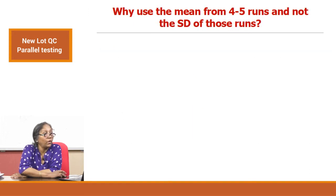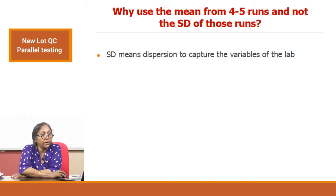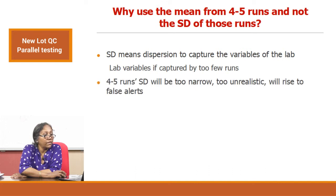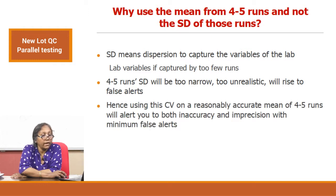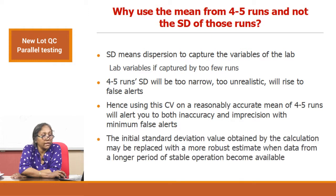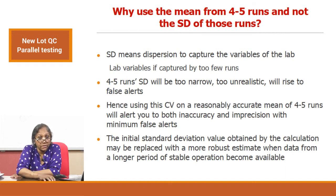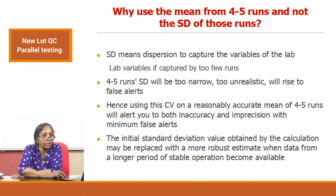Why use the mean from 4 to 5 runs and not the standard deviation? Standard deviation means dispersion, and to capture all the variables of the lab you need adequate runs. Lab variables captured by too few runs is not a good idea — 4 to 5 runs of standard deviation will be too narrow and unrealistic, giving rise to false alerts. Hence, using CV on a reasonably accurate mean of 4 to 5 runs will alert you to both inaccuracy and imprecision with minimum false alerts. The initial SD may be replaced with a more robust estimate when data from a longer period of stable operations becomes available.